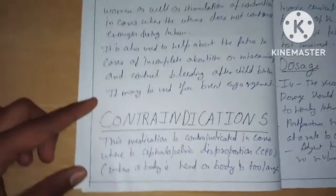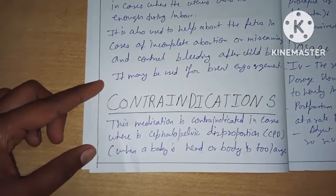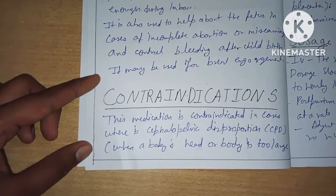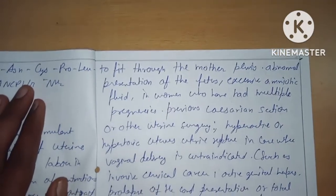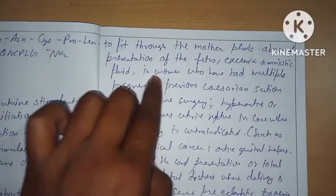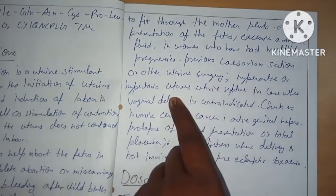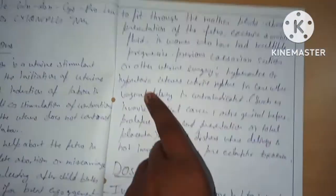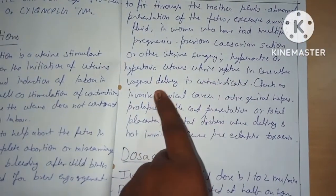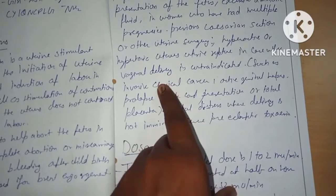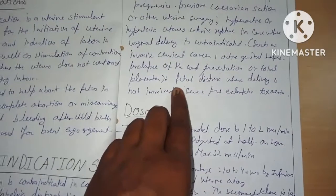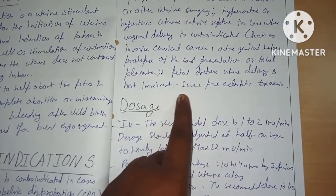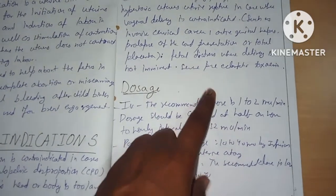Next is contraindications. This medication is contraindicated in cases of fetopelvic disproportion, where a baby's head or body is too large to fit through the mother's pelvis, abnormal presentation of the fetus, excessive amniotic fluid, multiple pregnancy, previous caesarean section or other uterine surgery, uterine rupture, and cases where vaginal delivery is contraindicated such as invasive cervical cancer, active genital herpes, prolapse of the cord, placenta previa, fetal distress, and severe pre-eclampsia.